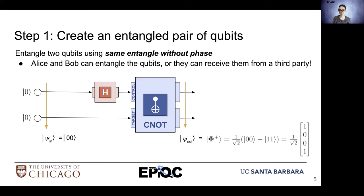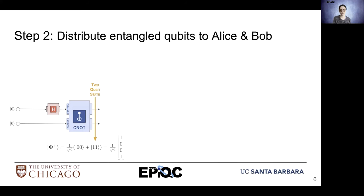To create entanglement, we can use the Hadamard gate and the CNOT gate. Once we have this entangled qubit pair, we distribute them to Alice and Bob. Alice and Bob can be separated by a great distance, but they just have to have their entangled qubits with them.